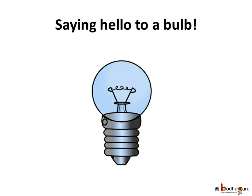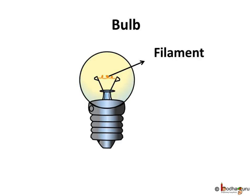Before that, let us understand the bulb which gives us light a little bit more. Look at the bulb a little closer when it is switched on. A small piece of wire in the middle of the bulb is glowing and emitting light. This small piece of wire is fixed in the middle of the bulb. It is called the filament.